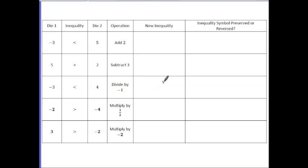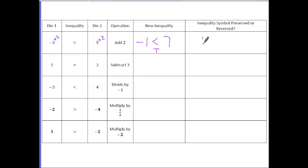Let's go through our table. Die 1 has rolled a series of numbers, Die 2 has rolled a series of numbers, and we have these inequalities — a mixture of less than or greater than. The first operation is add 2, so we're going to add 2 to both numbers. For the first one, I get negative 1 is less than 7. Negative 1 is less than 7 — this is a true statement, so our inequality is preserved.